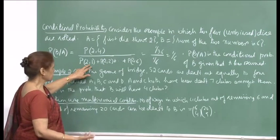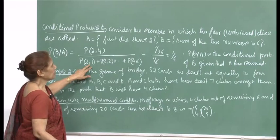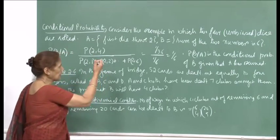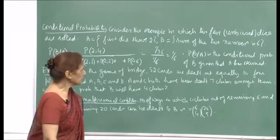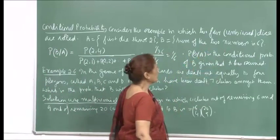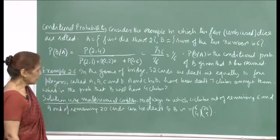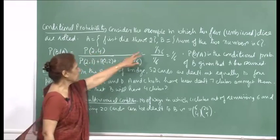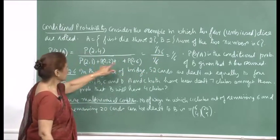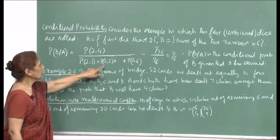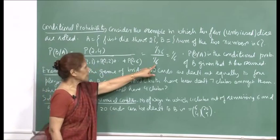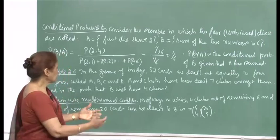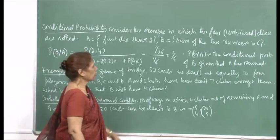P(A), the probability of getting first die showing 2 while the second shows any of 6 numbers, is 6/36 = 1/6. P(B ∩ A) = P({(2,4)}) = 1/36, since the dice are fair and unbiased. So P(B|A) = (1/36)/(1/6) = 1/6.